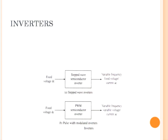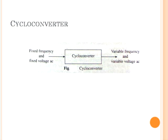Cycloconverters convert fixed voltage and frequency AC to variable voltage and variable frequency AC. They are built using thyristors and are controlled by firing signals from a low power control unit. Output frequency is restricted to 40% of the supply frequency in order to keep harmonics in the output voltage and source current within acceptable limits.